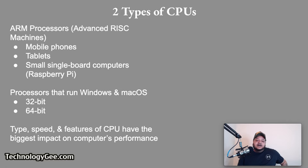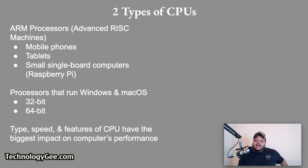There are two types of CPUs you need to know for the CompTIA IT Fundamentals exam. The first is the ARM processor, which stands for Advanced RISC Machines. ARM processors are used by mobile phones, tablets, and small single-board computers such as the Raspberry Pi. You also need to know processors that run Windows and macOS, which use either a 32-bit processor or a 64-bit processor. The type, speed, and features of the CPU have the biggest impact on a computer's overall performance.